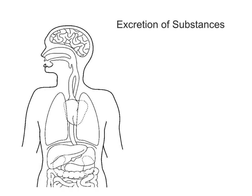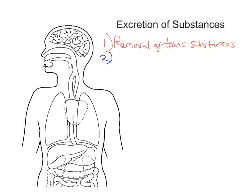We're removing waste, but not specifically just waste in general. In fact there are three things that we can define excretion as being, and in the IHCC specification it refers to all three. When we refer to excretion, number one is the removal of toxic substances. Number two, excretion also refers to the removal of waste products of metabolism.